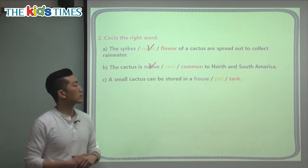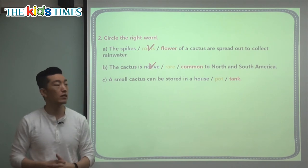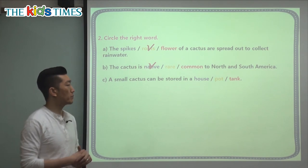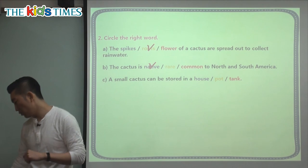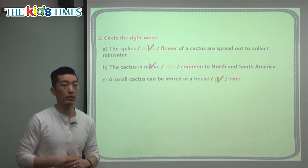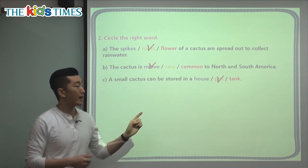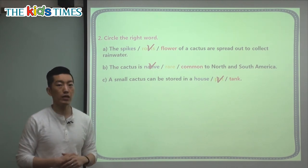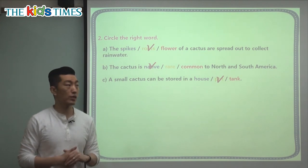Can a small cactus be stored in a house, a pot, or a tank? We usually put fish in a tank. In the picture we saw you can keep a cactus in a small bowl or pot. Maybe you have a cactus at home — if you're not careful you might get some spikes on you. What did we learn today? Cactuses need very little water, and they were first found in North and South America.